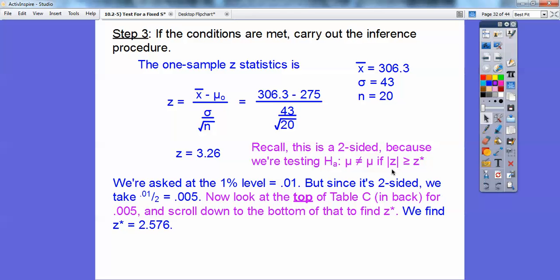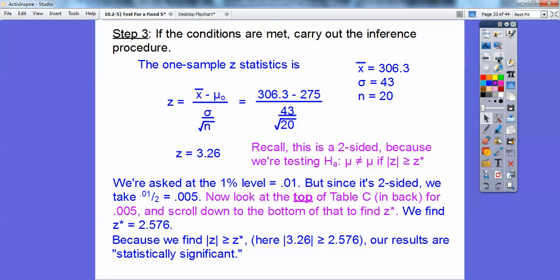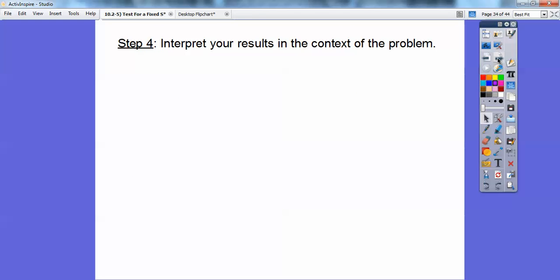So since your 3.26 is greater than 2.576, that is statistically strong enough evidence to reject our H₀. So our results are statistically significant to reject H₀. Here we go.